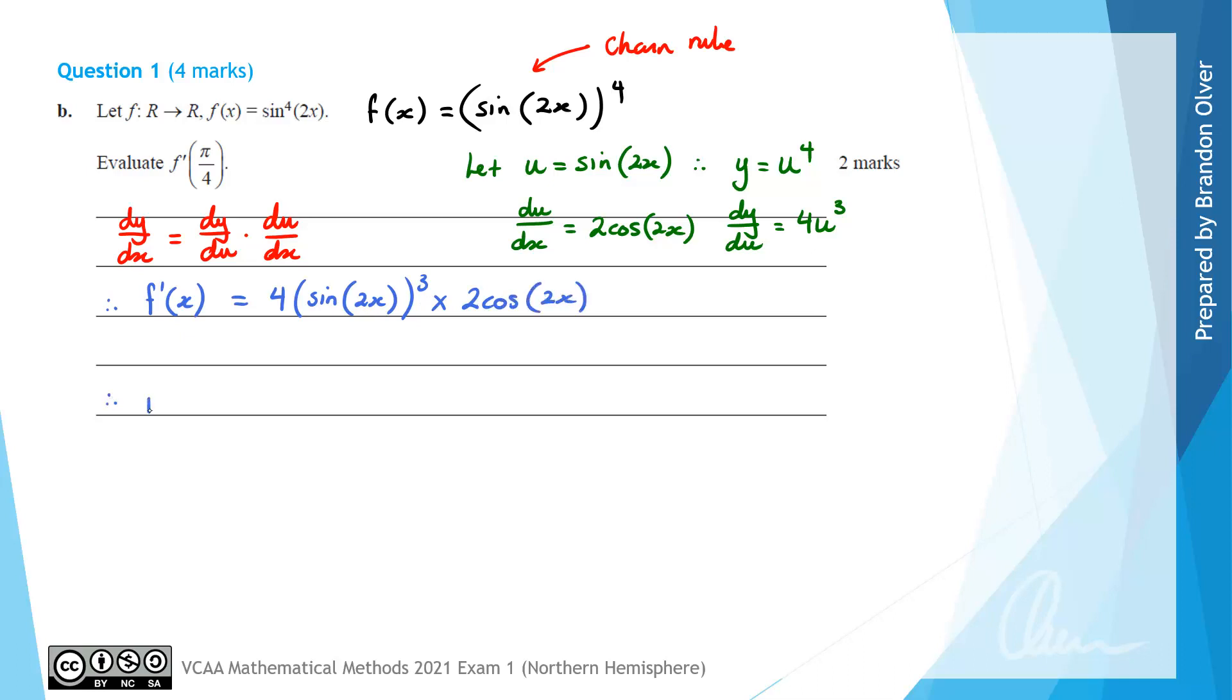So next, what we need to do is take that derivative and substitute x equals π/4 into that, because that's what the question's asking for. So this is going to equal 4 times sine of 2 times π/4, which is just going to be π/2, and then that's cubed.